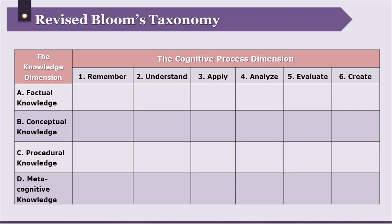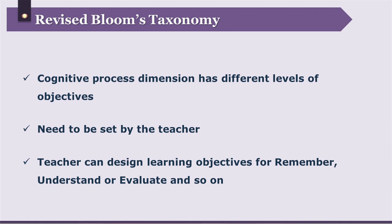The knowledge dimension includes factual knowledge, conceptual knowledge, procedural knowledge, and metacognitive knowledge. The cognitive process dimension includes remember, understand, apply, analyze, evaluate, and create. The teacher can consider factual knowledge from her content and design learning objectives for the remember level, understand level, evaluate level, or whichever level she wishes her learners to reach.